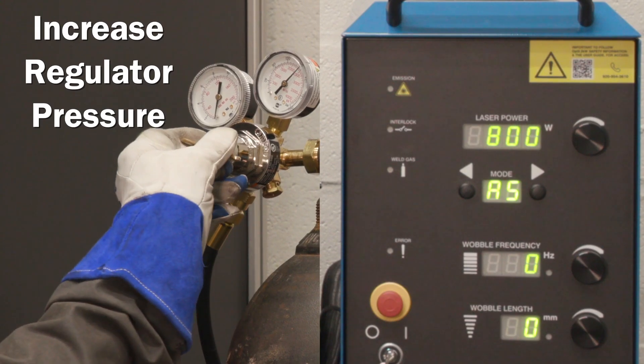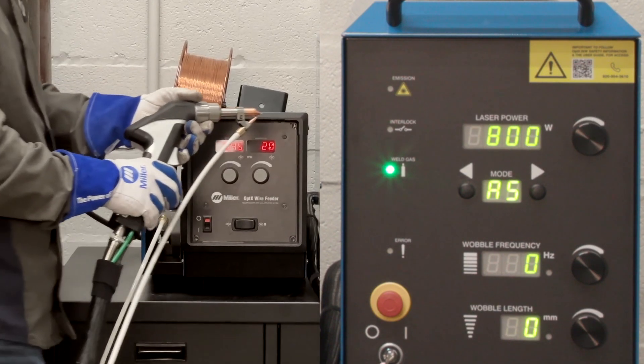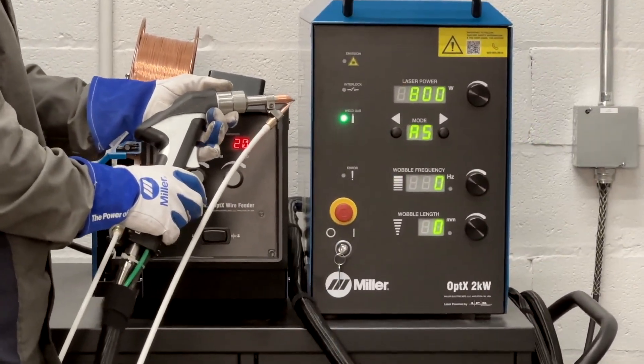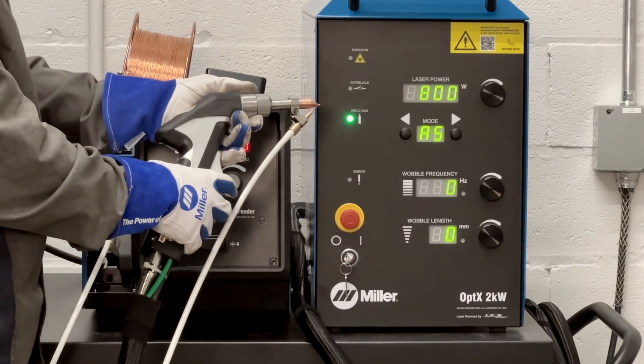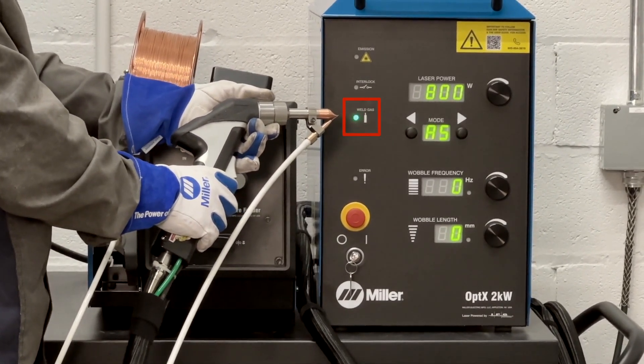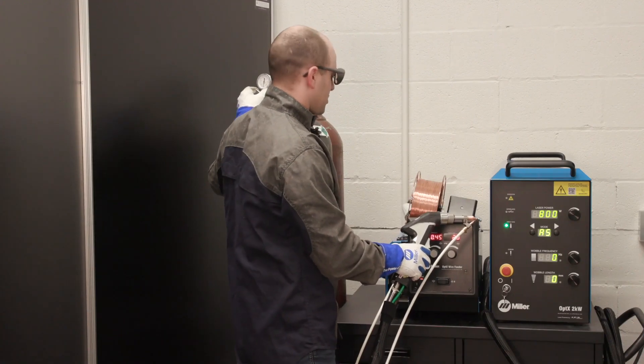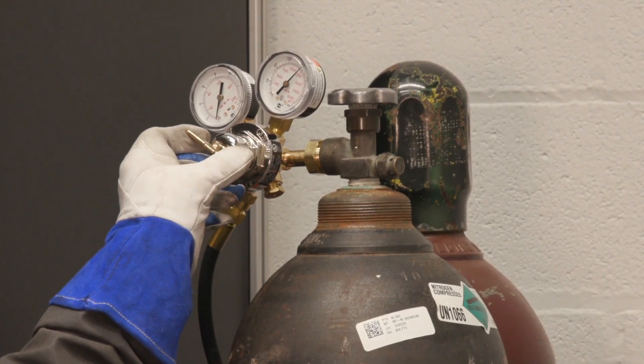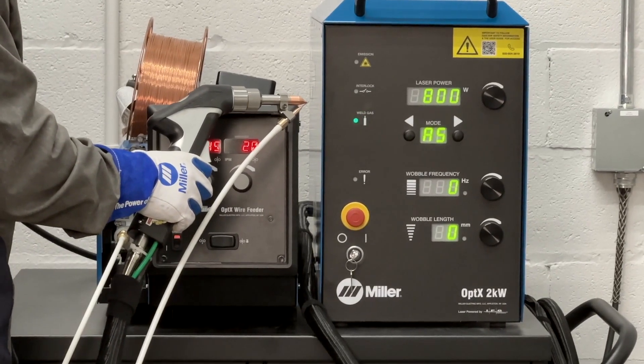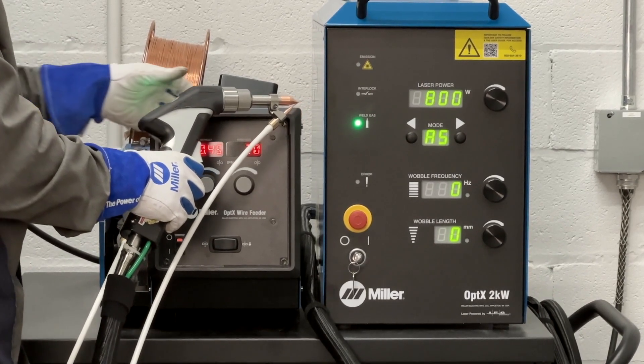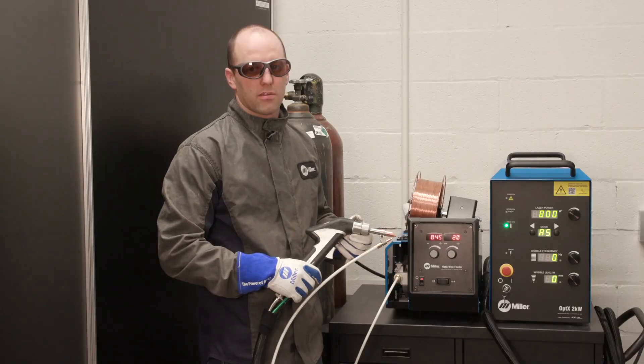Increase pressure until the green light is illuminated. Check the operating pressure by squeezing the first stage trigger on the back of the torch. If the light on the front of the system is flashing, simply increase pressure until that light stays illuminated continuously. Now you're ready for welding.